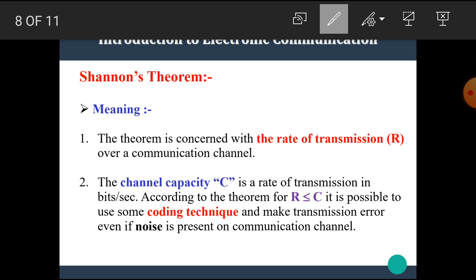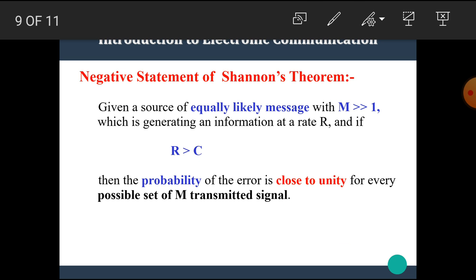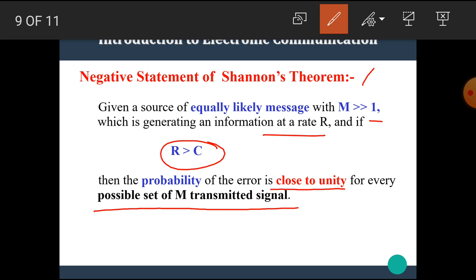Now let's see Shannon's theorem. The theorem is concerned with the rate of transmission R over a communication channel. The channel capacity C is the rate of transmission in bits per second. According to the theorem, for R less than or equal to C, it is possible to use some coding technique to make transmission error-free even if noise is present on the channel. The negative statement states that given a source with M messages generating information at rate R, if R is greater than C, then the probability of error is close to unity for every possible set of M transmitted signals.